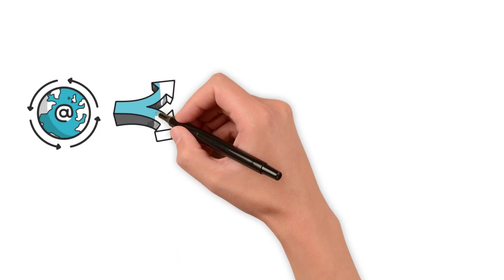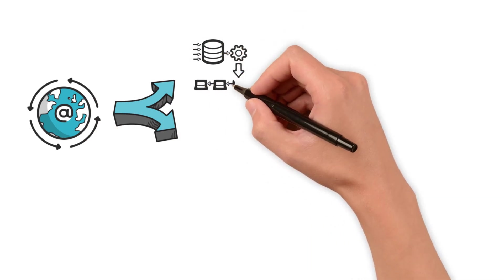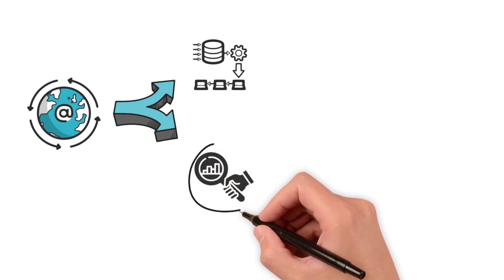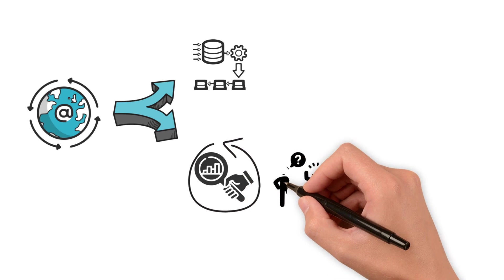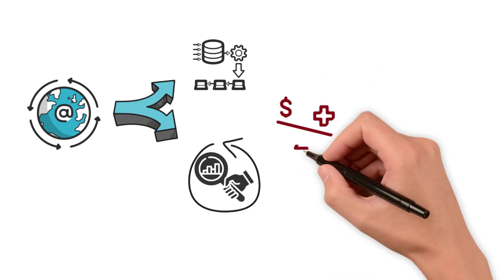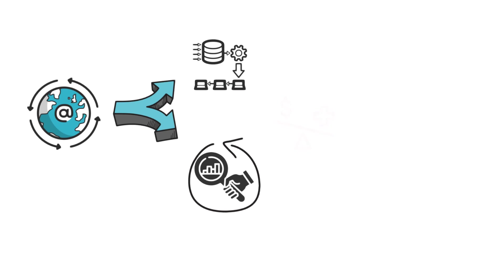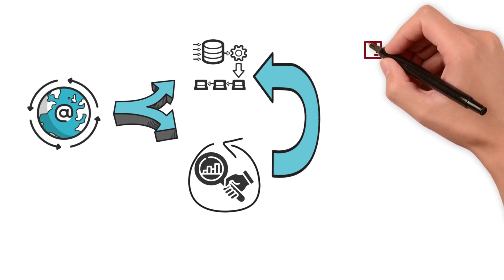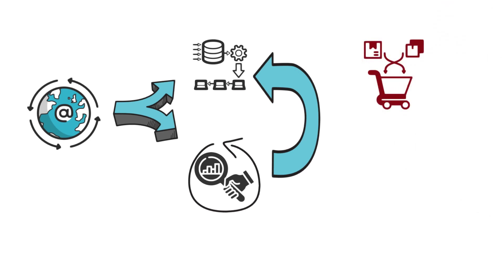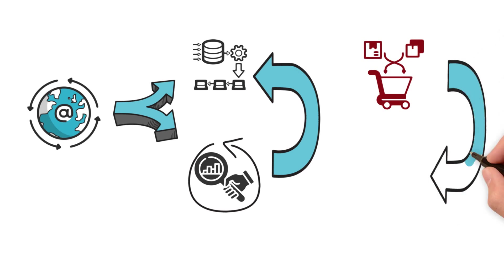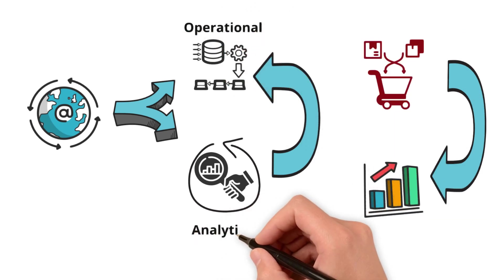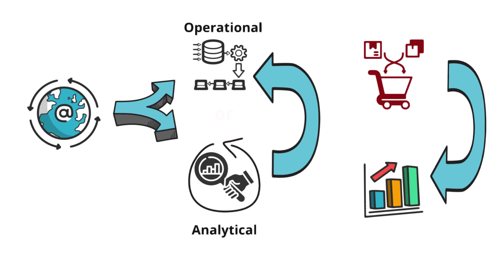Through these real-world scenarios, it is crystal clear that operational data powers daily operations while analytical data shapes the future. Given that analytical data drives business intelligence, it's easy to suspect it is more important — yet often, analytical data rests on the backbone of operational data. To conclude, operational and analytical data are complementary forces, each playing a vital role in the success of an organization. It's not operational or analytical data, but operational and analytical data.